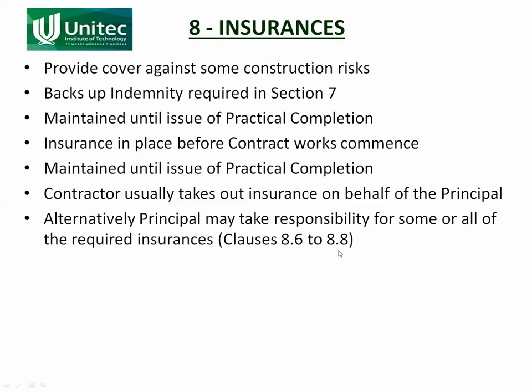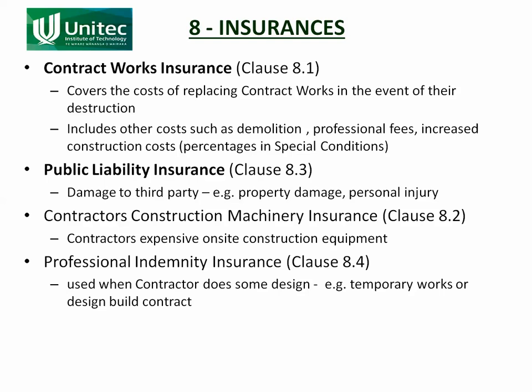NZS 3910 can be written so that the principal takes out the insurances. The first type of insurance typically in NZS 3910 is contract works insurance, covered by Clause 8.1. This is the cost of replacing the contract works if it's destroyed — so if it burns down halfway through the works, or if there's a storm, or something happens, the work can be rebuilt with the contract works insurance.